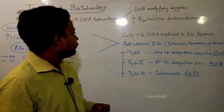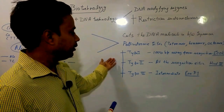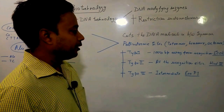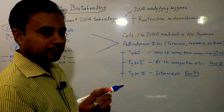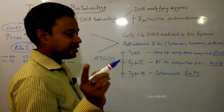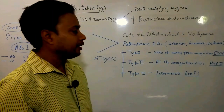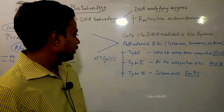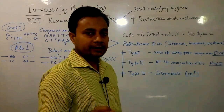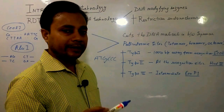On the basis of their cutting ability and recognition sites, restriction endonucleases are of three types. Type 1 enzymes cut DNA approximately 1000 base pairs away from the actual recognition site. Type 2 enzymes are the most popular and frequently used in gene cloning — they cut exactly at their recognition sites, for example HindIII. Type 3 enzymes are intermediate between type 1 and type 2.